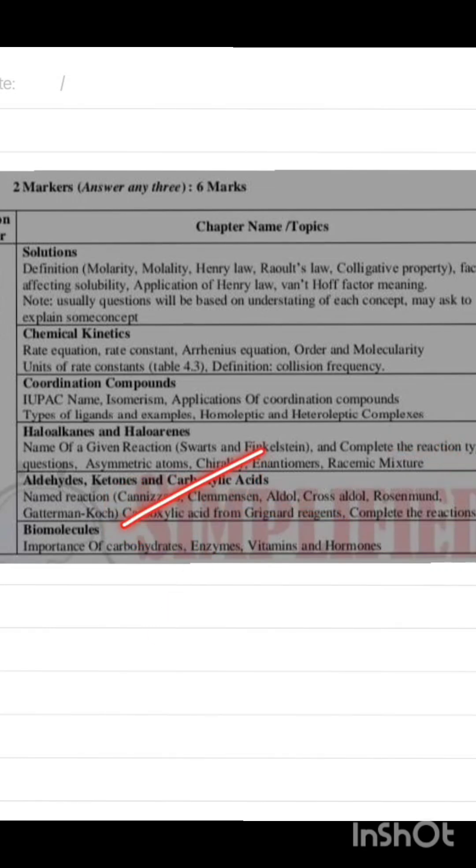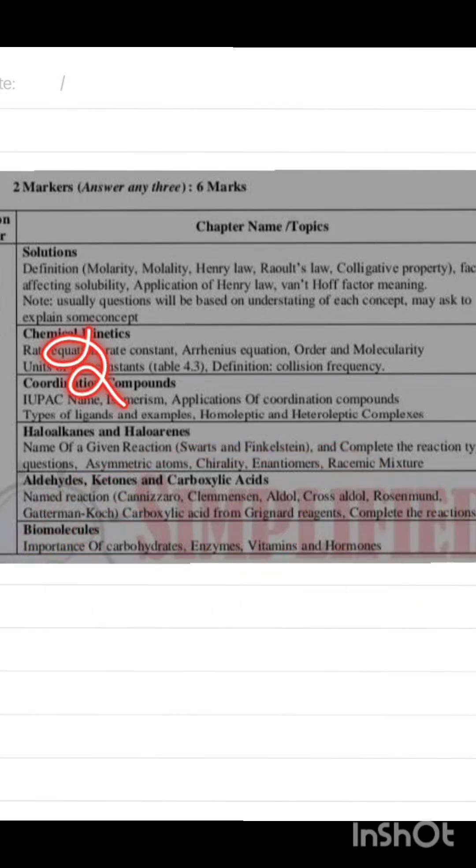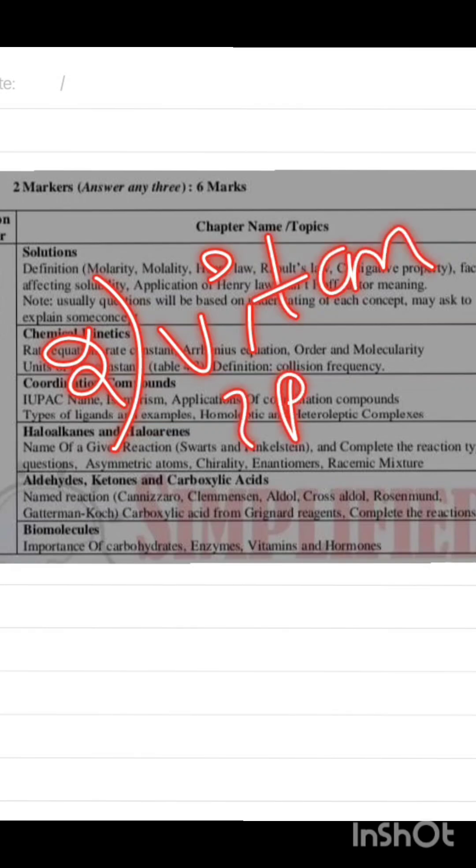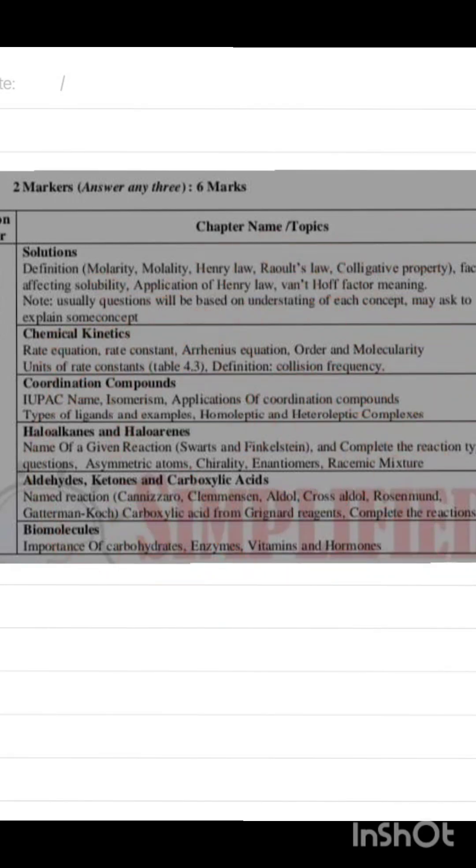Biomolecules - importance of carbohydrates and enzymes, vitamins, hormones. Vitamin for rickets is vitamin D. Blood clotting - important vitamins.